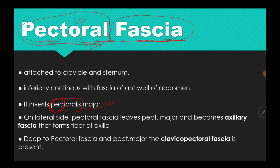The pectoral fascia is attached to the clavicle and sternum (manubrium). So this fascia is attached to the clavicle and sternum, and behind this fascia is the pectoralis major.